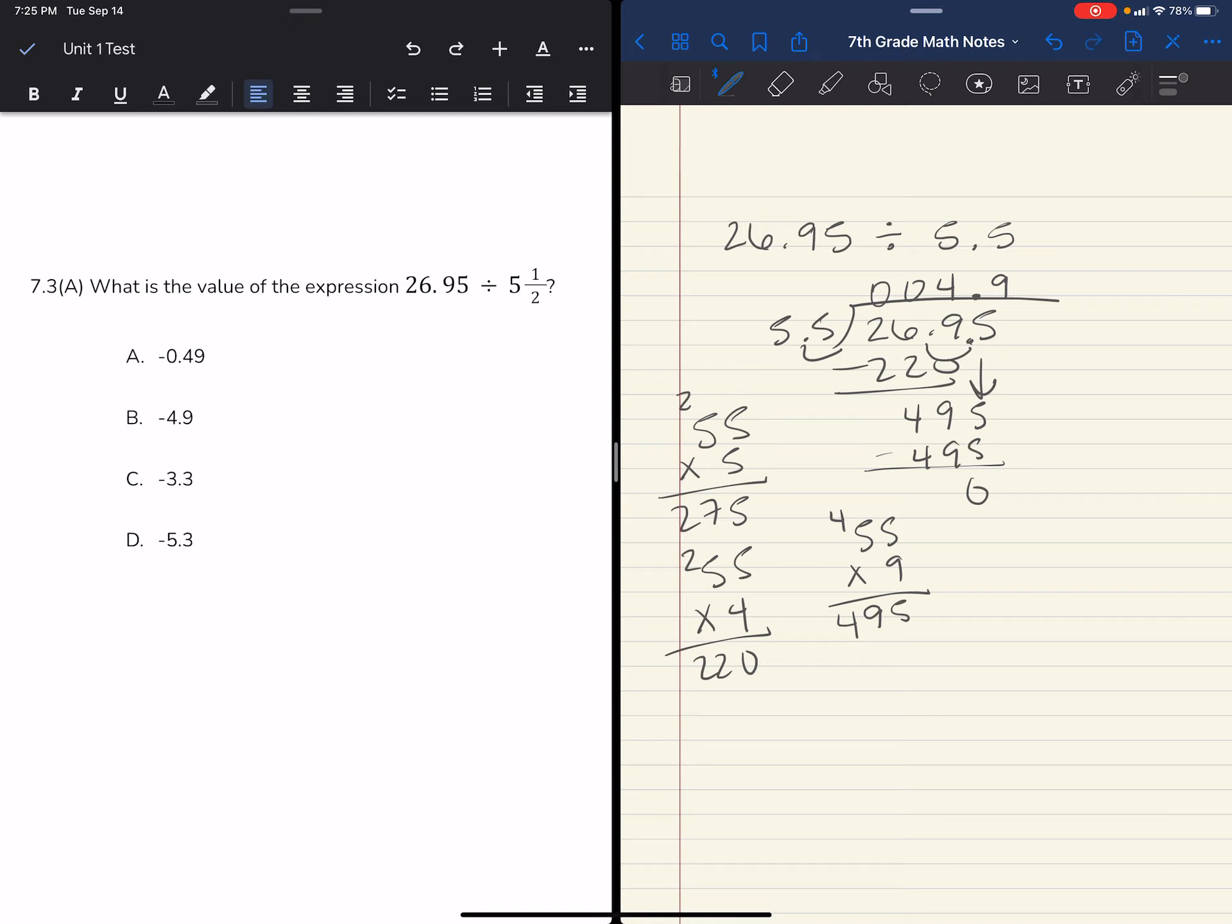My answer is 4.9. Now, yes, here there's a typo. The 5.5 is supposed to be negative, and I know that a positive divided by a negative is negative. Therefore, my answer is negative 4.9.